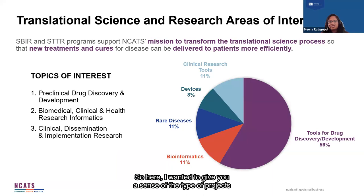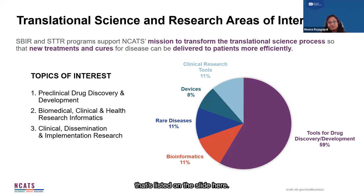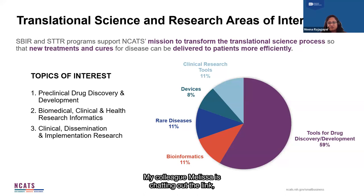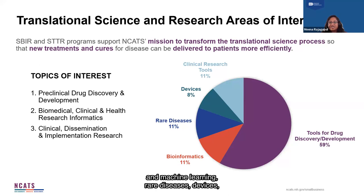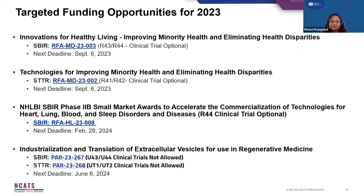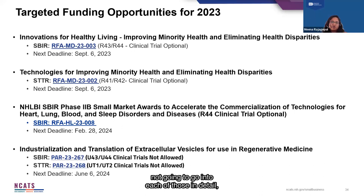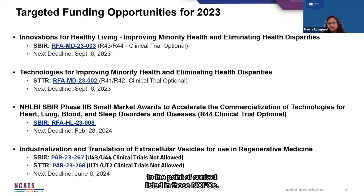I wanted to give you a sense of the type of projects that NCATS small business program has funded in the past. Our interest can broadly fall under three buckets listed on the slide, each with multiple subtopics — please visit our website to learn more. The pie chart shows that a majority of the projects funded fall under the tools for drug discovery and development, but we've also funded projects in artificial intelligence and machine learning, rare diseases, devices, and clinical research tools. I also wanted to spotlight a few of the targeted funding announcements that are currently accepting applications. Please check out our funding announcements, and if you have any questions, please reach out to the point of contacts listed in those NOFOs.